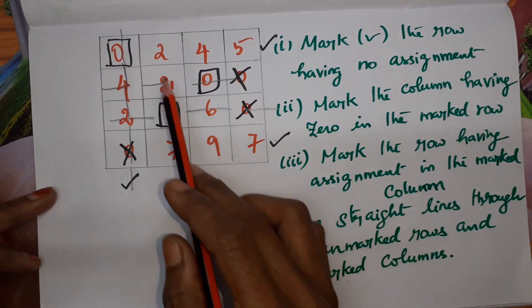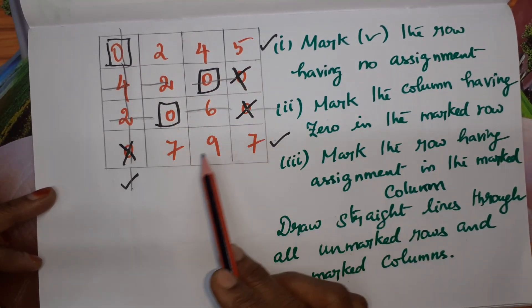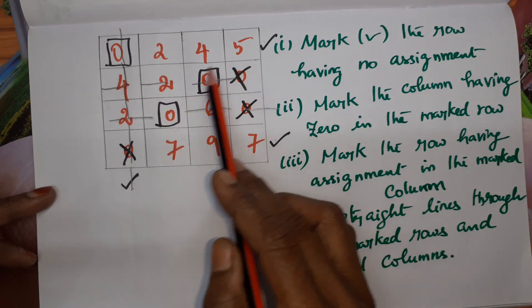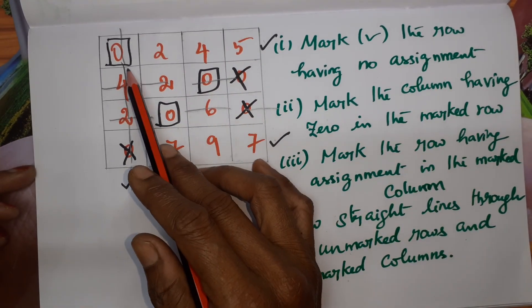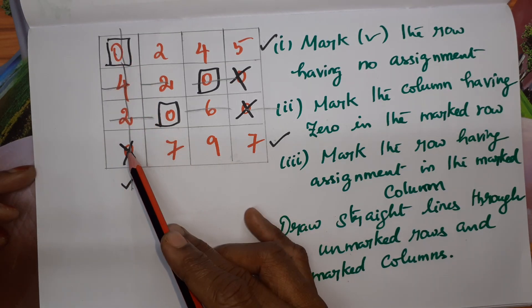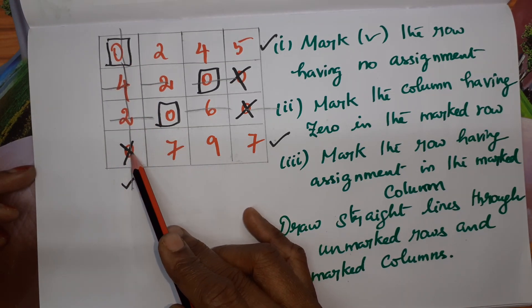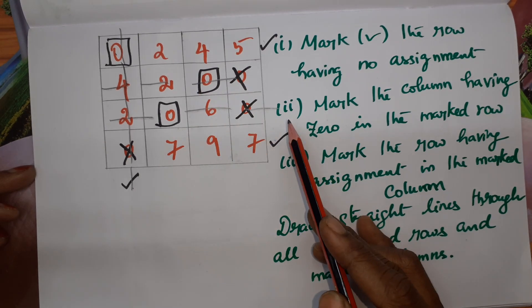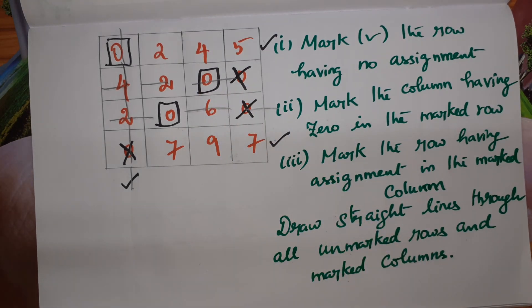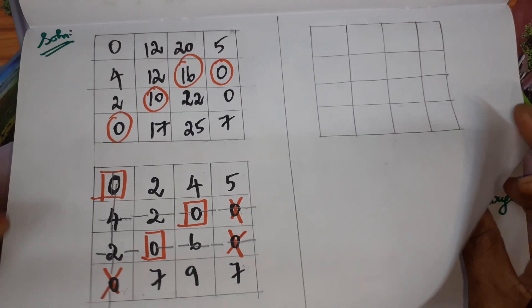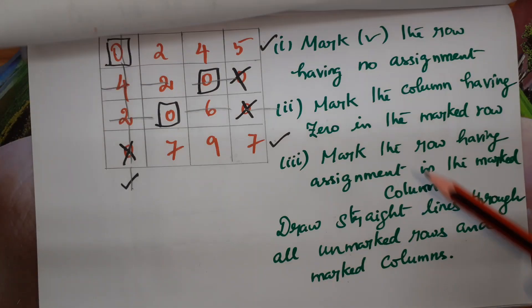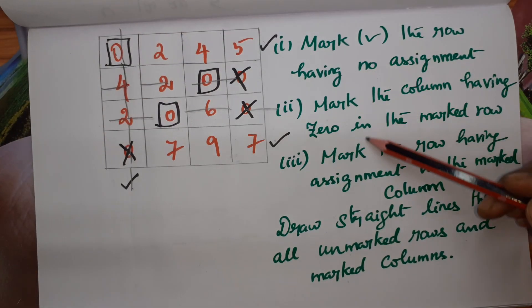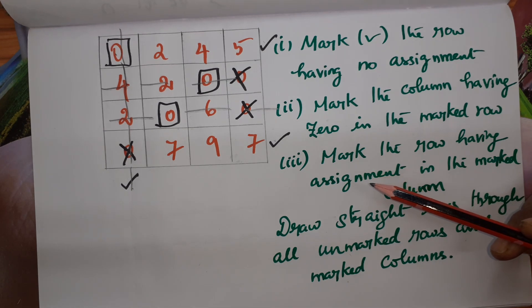After drawing straight lines, check whether all 0s are covered — both assigned 0s and cut 0s must be covered by these straight lines. You can use whichever method is easier: drawing minimum lines to cover all 0s, or using the three conditions. Both methods should give the same result.